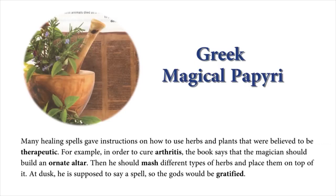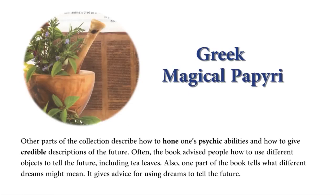Many healing spells gave instructions on how to use herbs and plants that were believed to be therapeutic. For example, in order to cure arthritis, the book says that the magician should build an ornate altar. Then he should mash different types of herbs and place them on top of it. At dusk, he is supposed to say a spell so the gods would be gratified. Other parts of the collection describe how to hone one's psychic abilities and how to give credible descriptions of the future. Often, the book advised people how to use different objects to tell the future, including tea leaves. Also, one part of the book tells what different dreams might mean and gives advice for using dreams to tell the future.